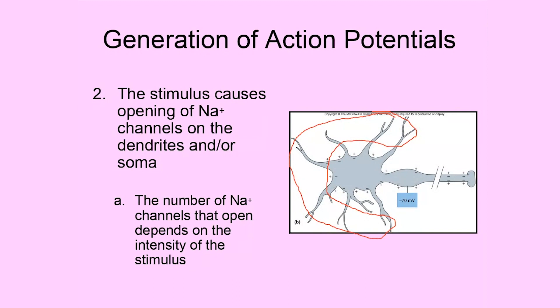If the stimulus is high intensity — say, high pressure — we get a lot of sodium channels opening. If the stimulus intensity is less, such as an insect gently landing on your skin, fewer sodium channels open. Depending on the intensity of the stimulus, you will get more or fewer sodium channels opening. The more intense the stimulus, the more sodium channels open; the less intense, the fewer open.